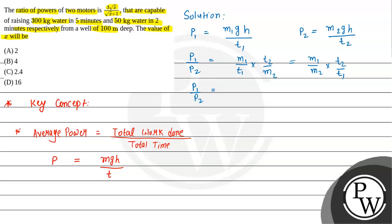m1 in the first case is 300 kg, so this is 300 divided by m2, which is 50, multiplied by... t1 is 5 and t2 is 2, so this becomes 2 divided by 5. We're not considering units because in a ratio, the units cancel out. If we solve this, 50 times 6 is 300, and this equals 12 divided by 5. So P1 divided by P2 equals 12/5.